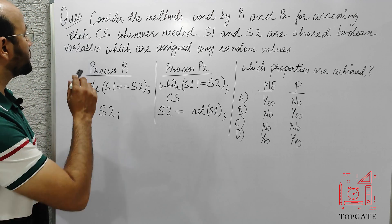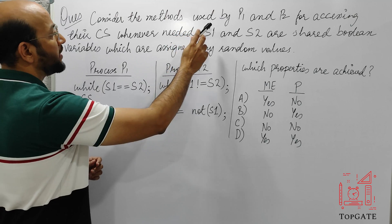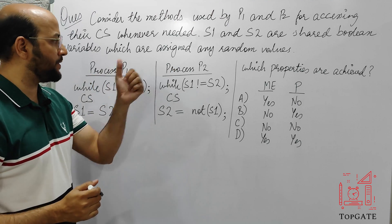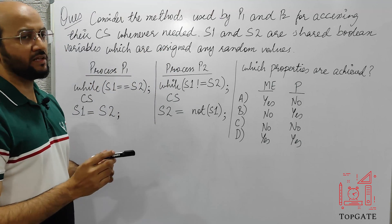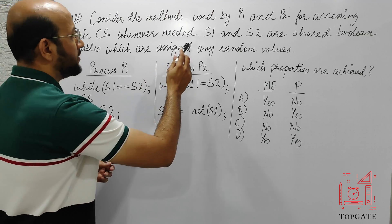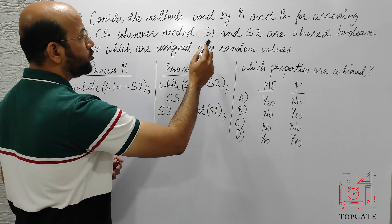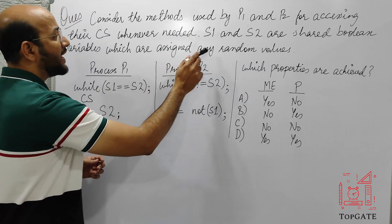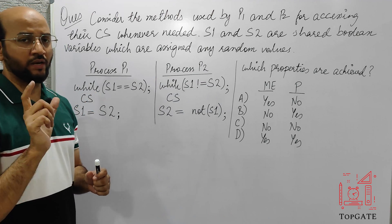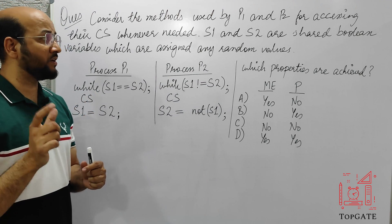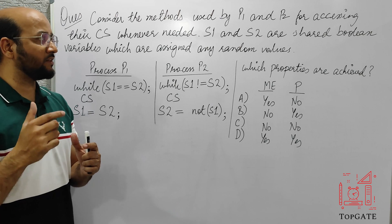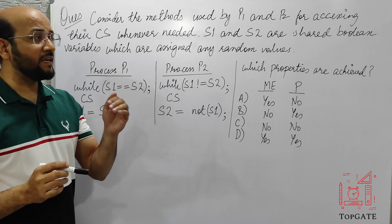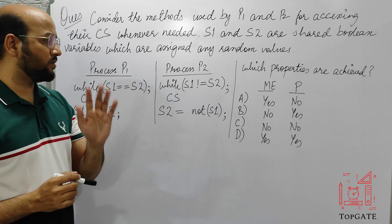Now let's solve one more question. Consider the methods used by processes P1 and P2 for accessing their critical section. We have two variables S1 and S2, which are shared Boolean variables assigned any random values — either true or false.